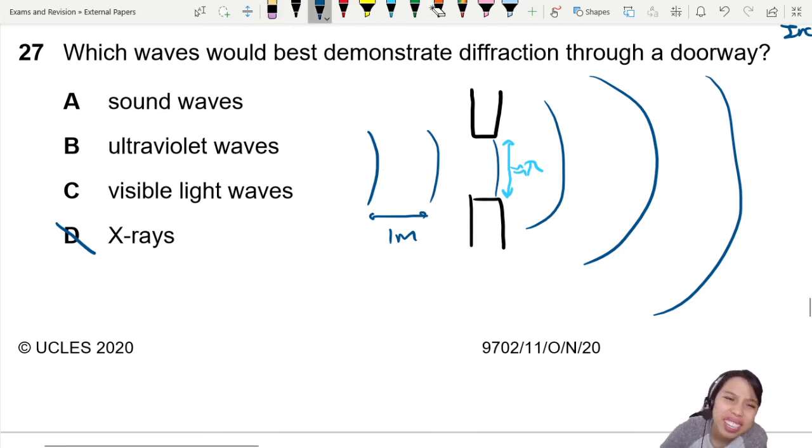Light waves through a doorway, no. The gap is too big. Ultraviolet also, no. Sound waves can work, depending on what sound you are playing. But best demonstration for diffraction, you use sound waves.